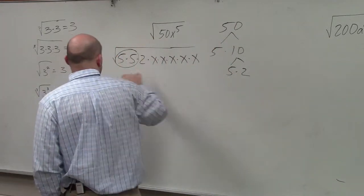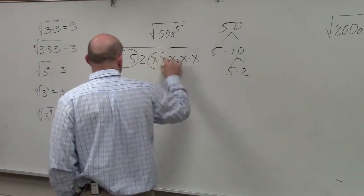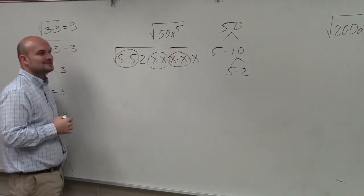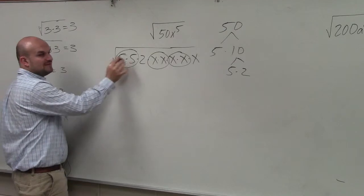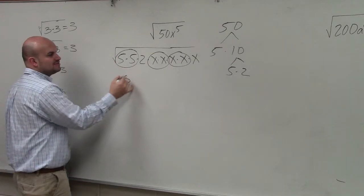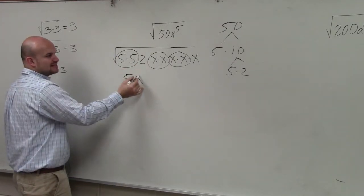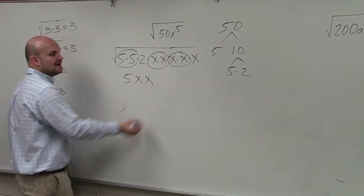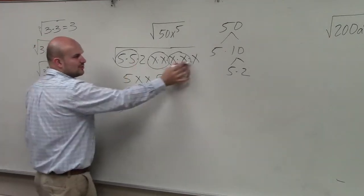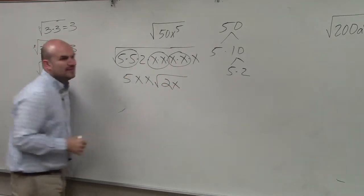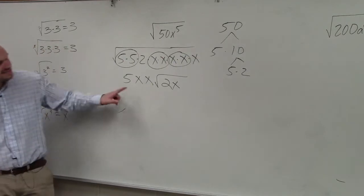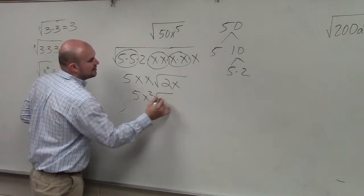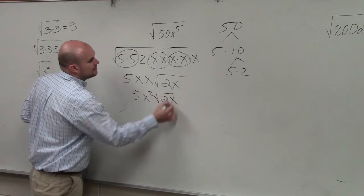So I can take out 5. I can take the square root of x times x. And I can take the square root of x times x. So the square root of 5 times 5 is just 5. Square root of x times x is x. Square root of x times x is x. And therefore, I'm left with a 2 and an x. Now I simplify.